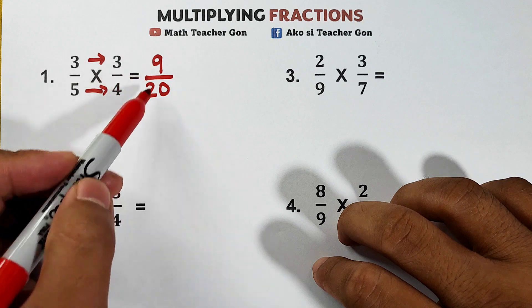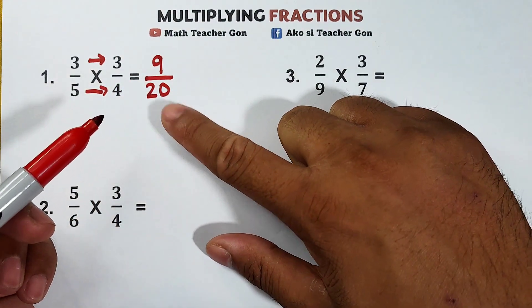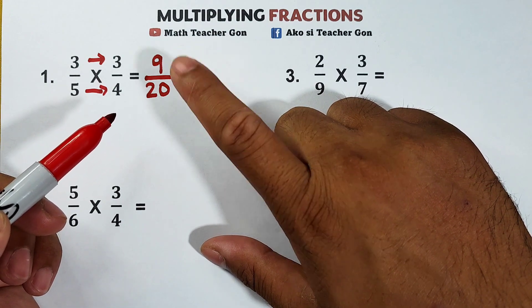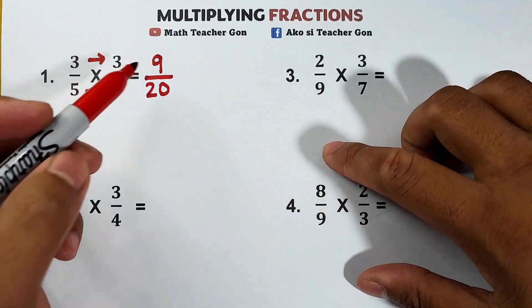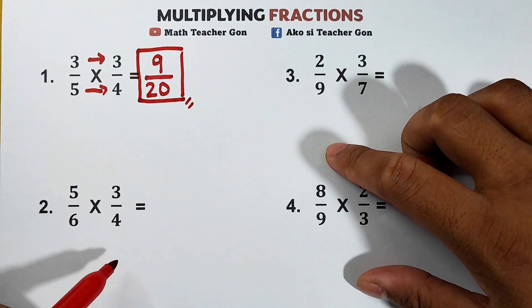Now as you can see, the product is 9 over 20. We need to think if it is possible for us to simplify or express this fraction in lowest terms. So in this case, this one is the final answer. The answer is 9 over 20.